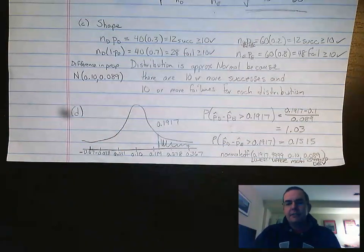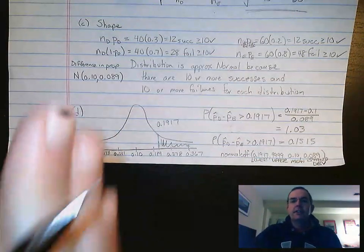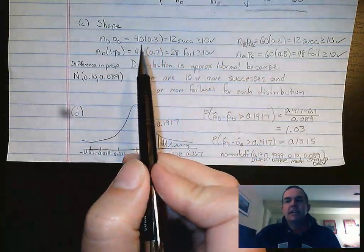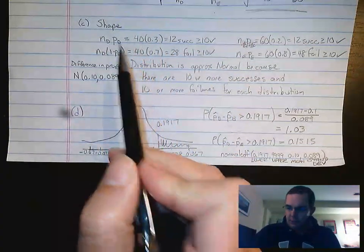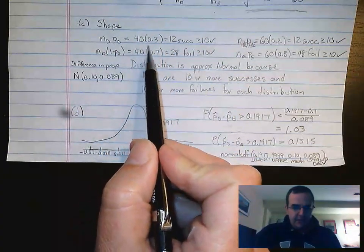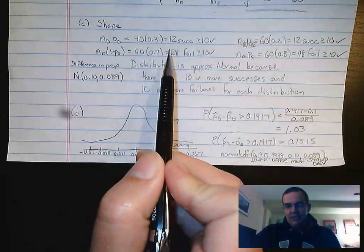For proportions, we have to have 10 or more successes, 10 or more failures. So what we need to do is take a look at both distributions and figure out, based on the parameter, how many successes would we expect?